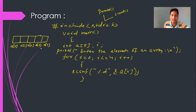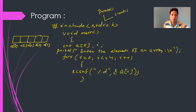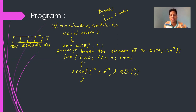Contiguous means adjacent memory locations — there will be no gap between one element and the next. Similar type of data elements means all elements will be of one type. Here I declared int, so I can store 5 integer values. If I declare float a[5], I store 5 floating point values. Similarly, a character array stores 5 characters.